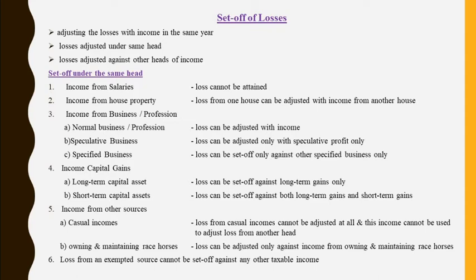Now, income from house property. Under the head income from house property, if the assessee has more than one house, and under one house he has a loss and in the other house he has an income, the income from one house can be adjusted with the loss from the other house. Loss from one house can be adjusted with income from the other house.